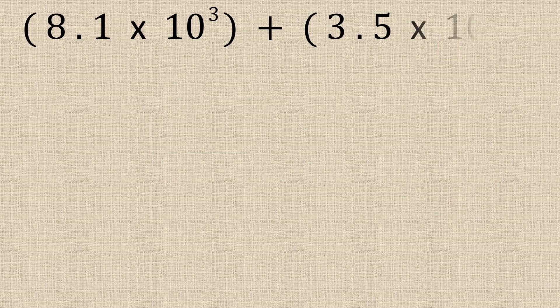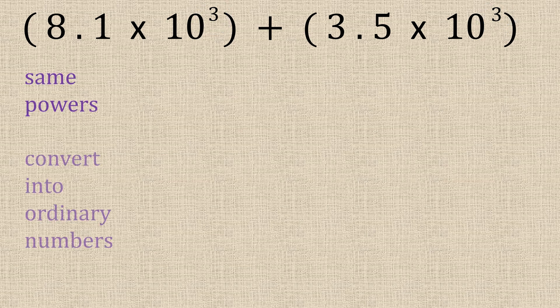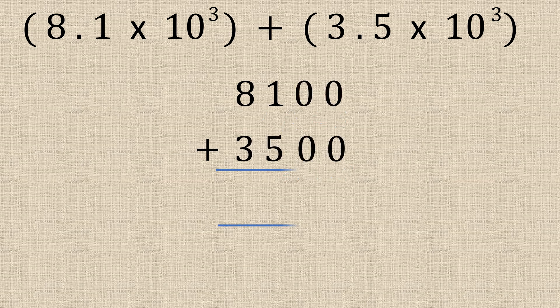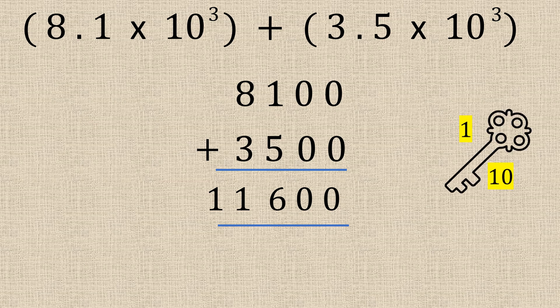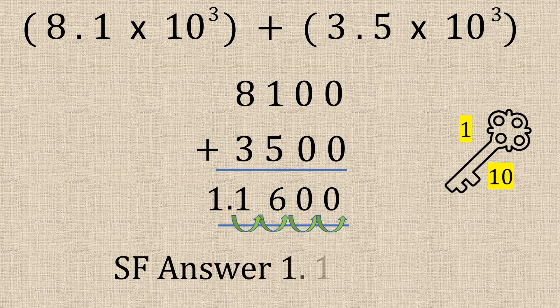So let's have a look at this one. It's the same powers and we're going to convert them into ordinary numbers and add it up. Okay so here's our answer. Now not forgetting the key 1 and 10. We need to change this to 1.16 placing the decimal here. Now let's count the jumps. 1, 2, 3, 4. So our answer is 1.16 times 10 to the power of 4.